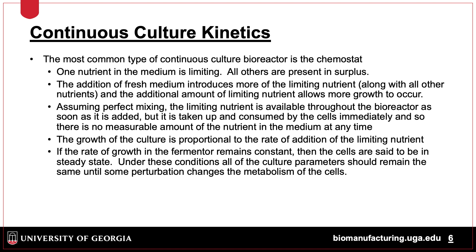The chemostat is the most common type of continuous culture. In this setup, one nutrient is limiting but all others are in surplus. Addition of the limiting nutrient can be used to control growth; the nutrient is taken up by all cells and growth is proportional to the amount of nutrient added. Cells are removed to maintain the same cell density, and under these conditions, cells should remain in the same growth state as product is produced.